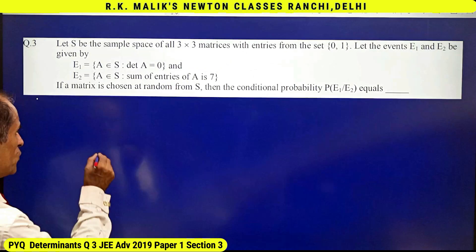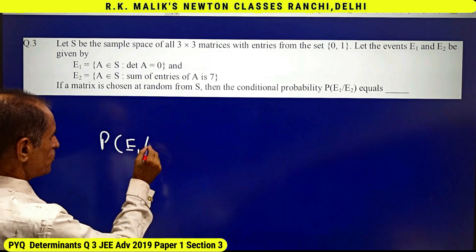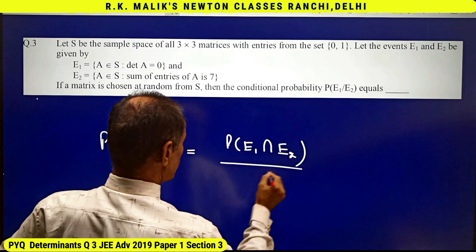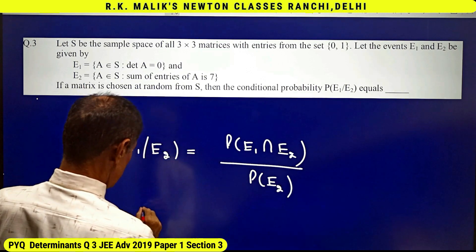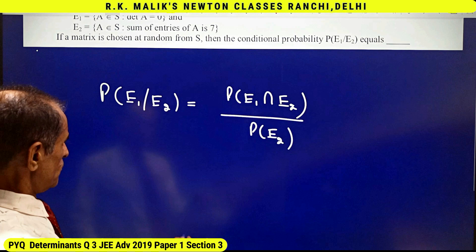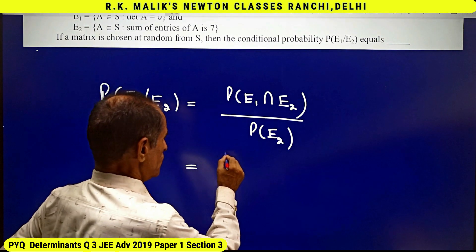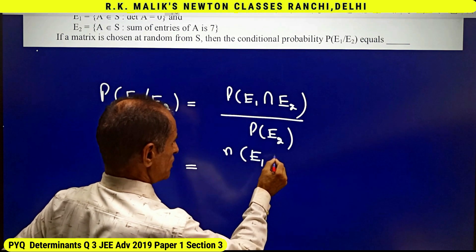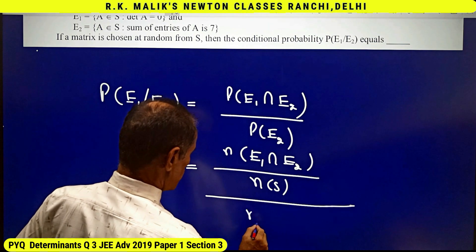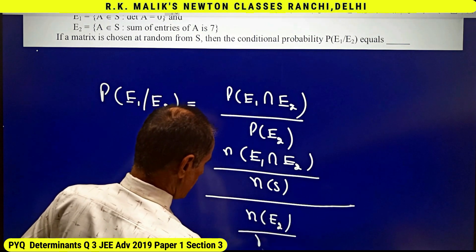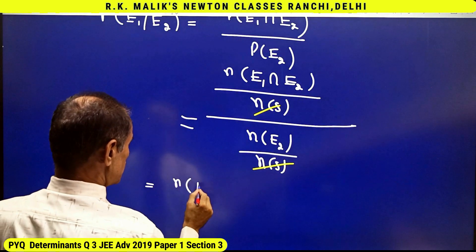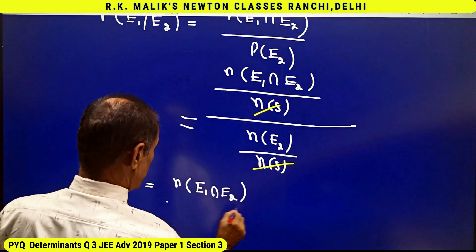We need to find the conditional probability P(E1|E2). We know the formula: P(E1|E2) = P(E1 ∩ E2) / P(E2), which simplifies to n(E1 ∩ E2) / n(S) divided by n(E2) / n(S). The n(S) terms cancel, giving us n(E1 ∩ E2) / n(E2).